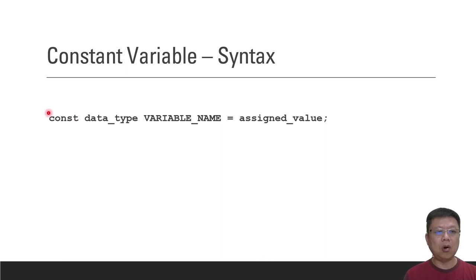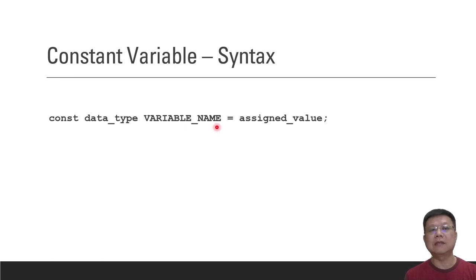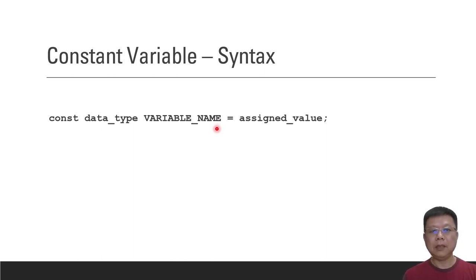To declare a constant variable, we use the keyword 'const' (c-o-n-s-t), followed by the data type, then the variable name, and then assign the value. Remember that constant variable names are typically written in ALL CAPITAL LETTERS to differentiate them from normal variables.